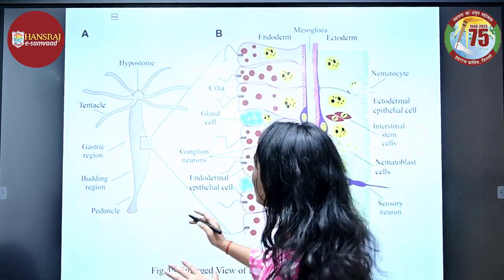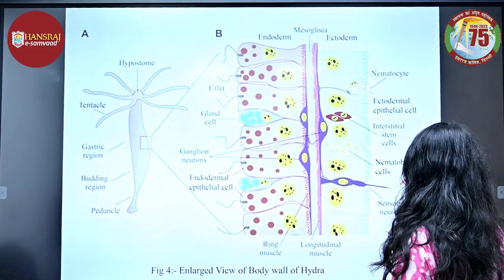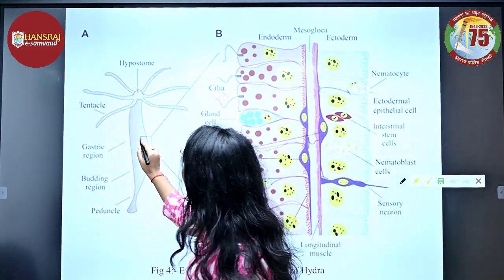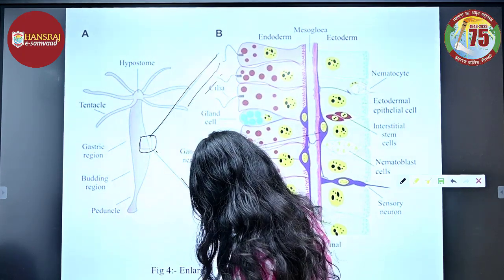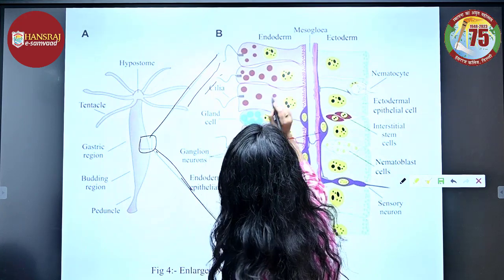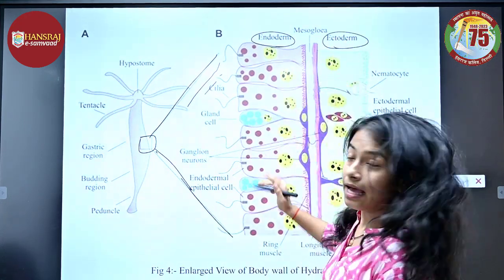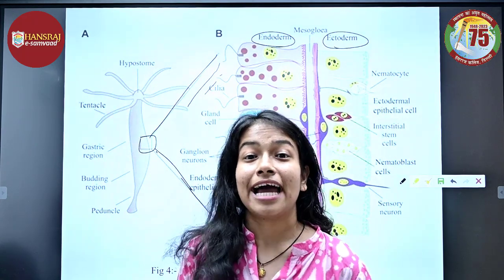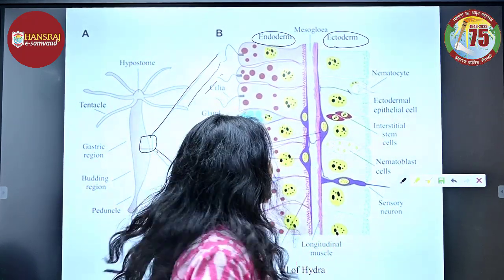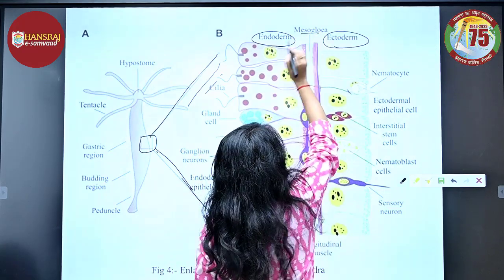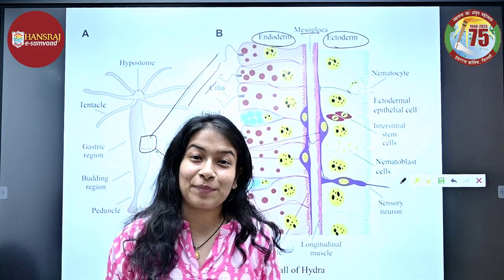Here I am showing an enlarged view of the body wall of Hydra. This is the endoderm, and this is the ectoderm. Cnidarians are diploblastic animals with two germ layers — ectoderm and endoderm — separated by mesoglea, which is very gelatinous and gives the jelly-like appearance.